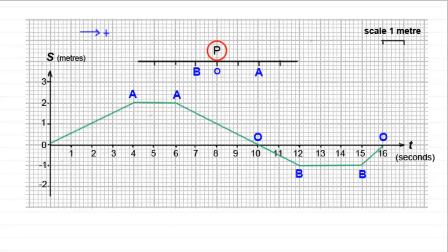Now, another point worth mentioning is that velocity is given by the gradient. So, for instance, over this first section, from O to A, you can see that P covers two metres in four seconds. So, gradient is going to be two divided by four, which is a half. So, therefore, its velocity is a half a metre per second to the right.